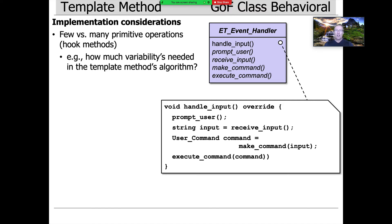Other considerations I alluded to earlier: the choice between few hook methods versus many. How many hook methods do you need? The answer really comes down to how much variability you need in the template method's algorithm. Here, it was pretty appropriate to have four methods — prompt user, receive input, make command, and execute command. We didn't actually change receive input or execute command, so maybe we only needed two. But had we done a more interesting example with multiple threading or input from other sources like a file or network, we probably would have appreciated leaving those hook methods in the design, because it gave us more flexibility and freedom.